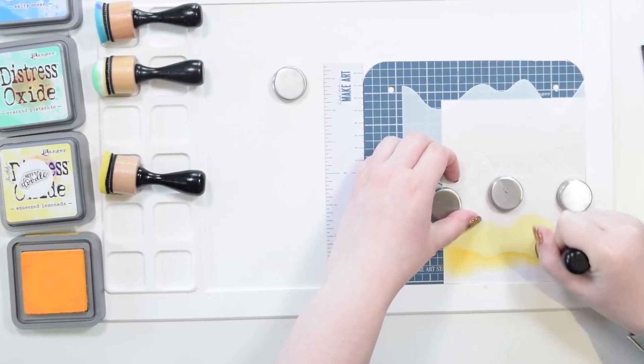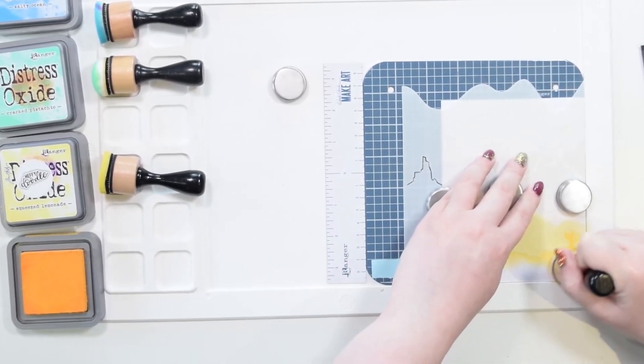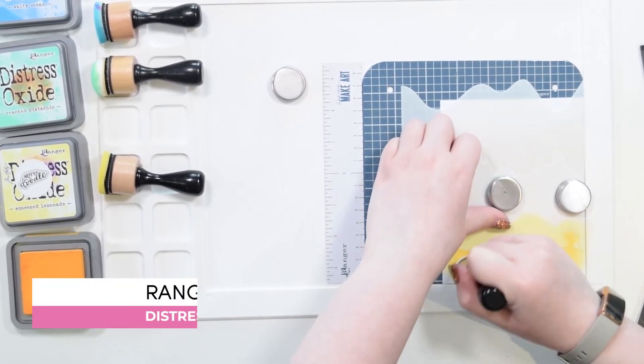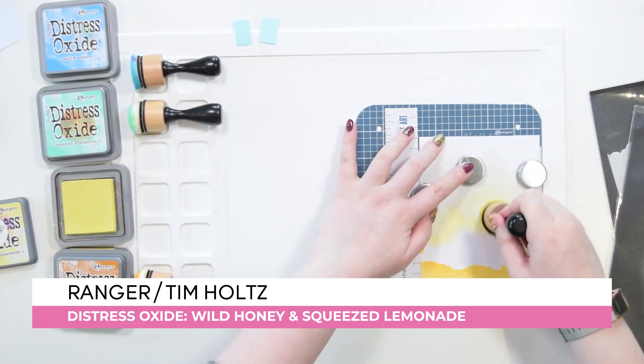Once I was happy with the positioning of the different elements, I got to ink blending. I'm using four different Distress Oxides today. This is Wild Honey at the bottom panel here. I then used Squeezed Lemonade to do this sort of rocky mountain terrain.